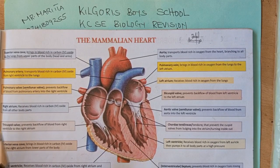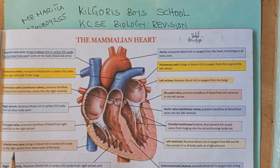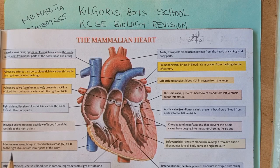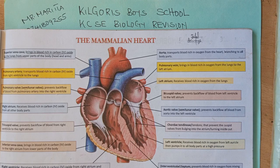Welcome to KCSE revision channel. I'm teacher James Marita from Creole Spice High School. Subscribe to my channel and click the notification bell to get notified once I upload a new video. We are looking at KCSE revision biology essays — the commonly set questions in paper 2 section B, which normally carries 20 marks. Today we are looking at the functions of the various parts of the mammalian heart.